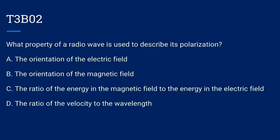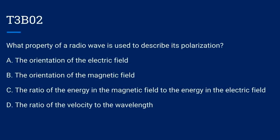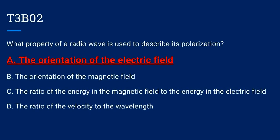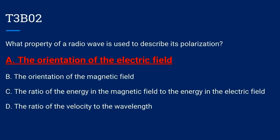T3B02. What property of a radio wave is used to describe its polarization? A. The orientation of the electrical field. B. The orientation of the magnetic field. C. The ratio of the energy in the magnetic field to the energy in the electric field. Or D. The ratio of the velocity to the wavelength. The correct answer is A: the orientation of the electric field.